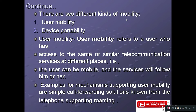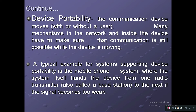Examples for this mechanism, as mentioned earlier, include call forwarding and roaming. When we talk about device portability, whether or not the user is present, the communication device moves. Many mechanisms in the network and inside the device must ensure that communication is still possible while the device is moving. A typical example of a system supporting device portability is the mobile phone system, where the system hands the device from one radio transmitter to the next.